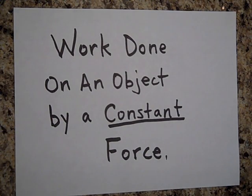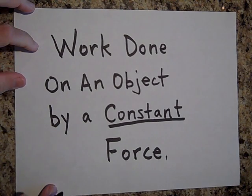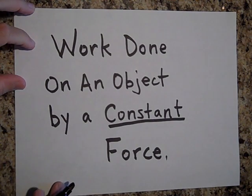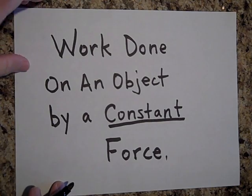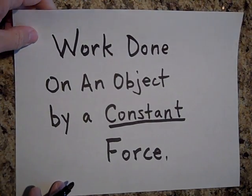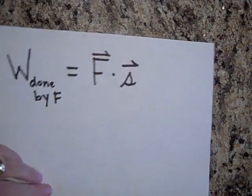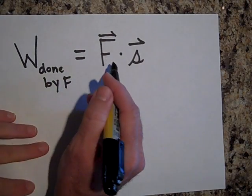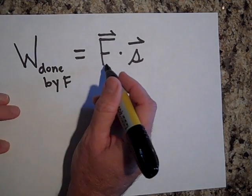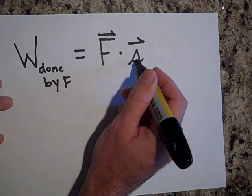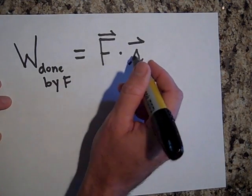I want to tell you about the work done on an object by a constant force. If we have a constant force on an object — it doesn't have to be the net force, it can be any force — but it's going to be constant. Here is your basic equation for the work done by a constant force: it's the dot product. What you're doing is taking the part of F that's in the direction of S and multiplying it by S.